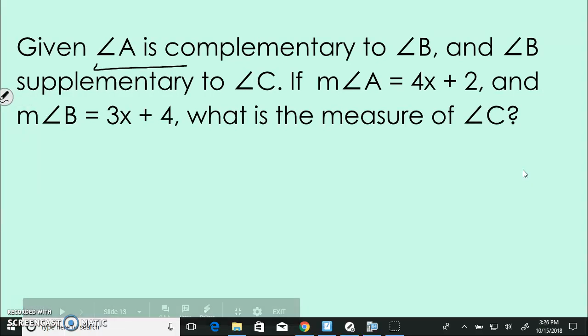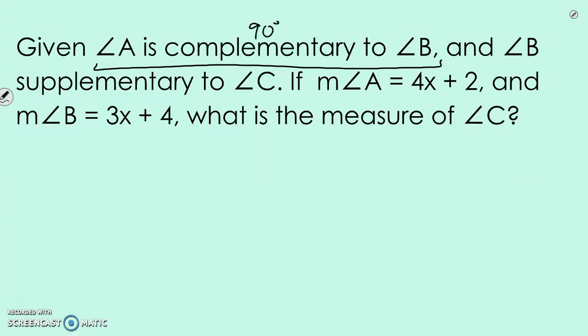So this is one of my favorite types of questions because I think it's pretty challenging, but it's definitely not something that we can't do. We just have to really read the information and figure out what it's saying. All right. Given angle A is complementary to angle B. Complementary, I should automatically think 90 degrees. All right.